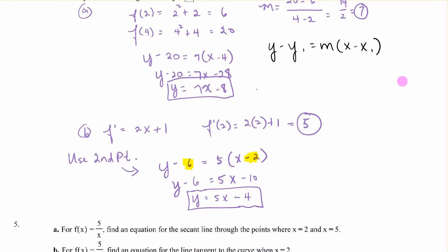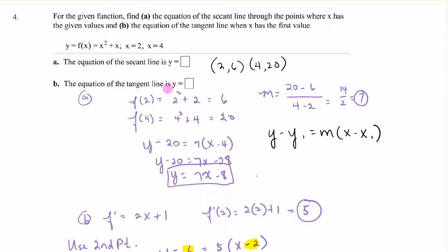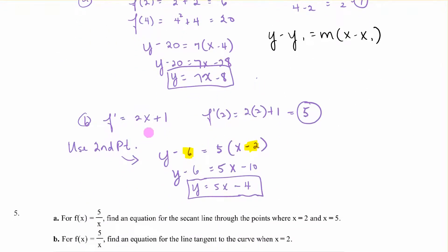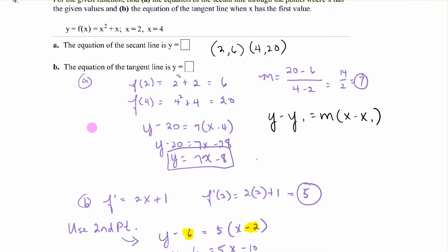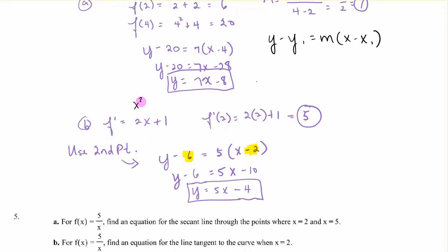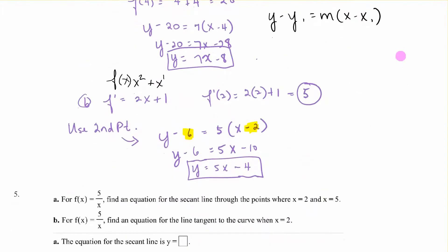Next we're finding the equation of the tangent line, so we have to find the slope. Our original equation was x² + x. The derivative of that is 2x + 1. Now f'(2): plug in 2 to that, so that's 5. Pick one of the points we had, (2, 6). Plug it in, and here is the equation of the tangent line.